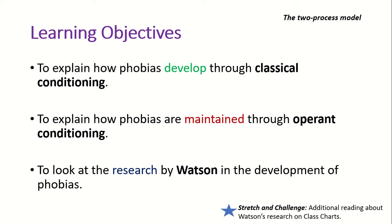There's additional reading on class charts — it's in the stretch and challenge section. You don't necessarily have to read it for this lesson, but if you're interested in Watson's ideas about how emotions can be affected through associations and classical conditioning, that information is there. If you haven't done so already, it might be worthwhile having a quick skim through your notes on behavioural psychology, in particular Pavlov and Skinner. You don't need Bandura for this two process model, but many key terms will be things we've already covered in the first few weeks of the course.